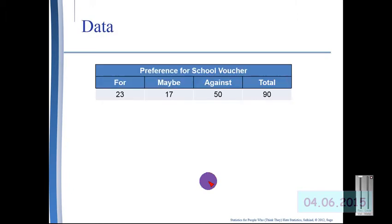So we see here in our data that we have three options for the respondents' preference for school vouchers. In this case 23 people are for it, 17 selected maybe, and 50 selected against. That is three categories that happen to total up to 90. So in this case 23, 17, and 50 are our observed frequencies.